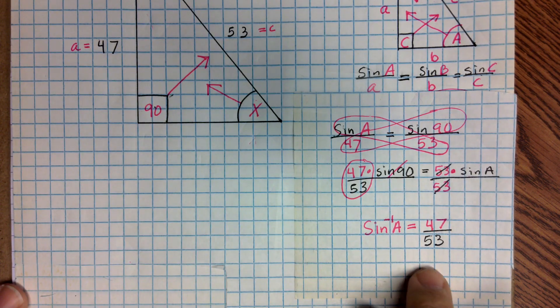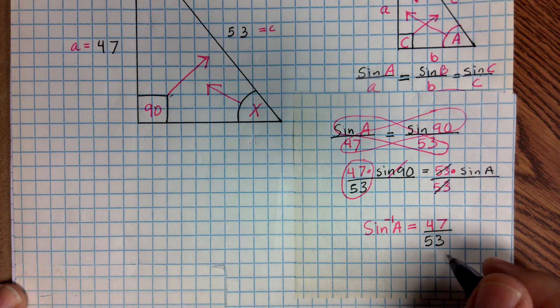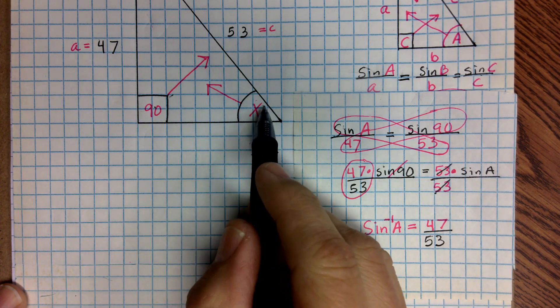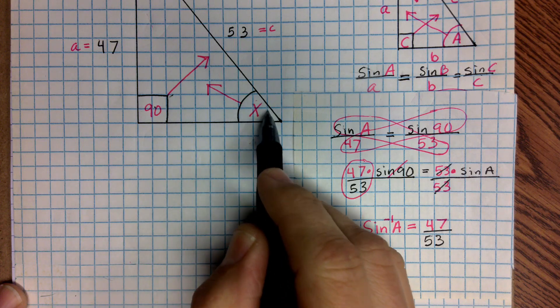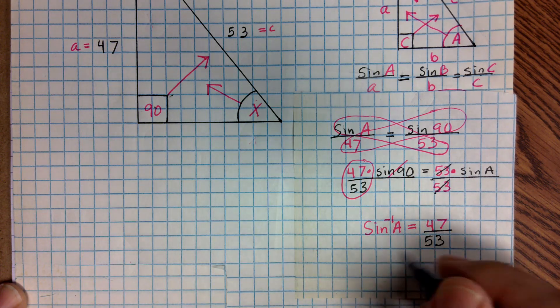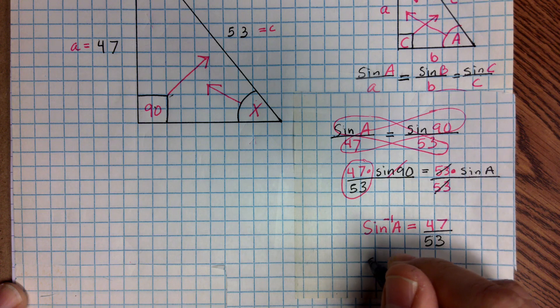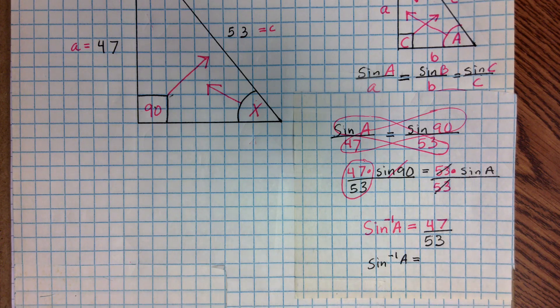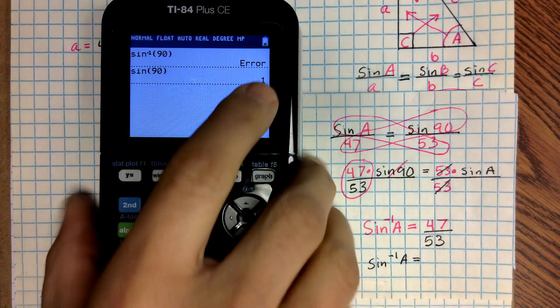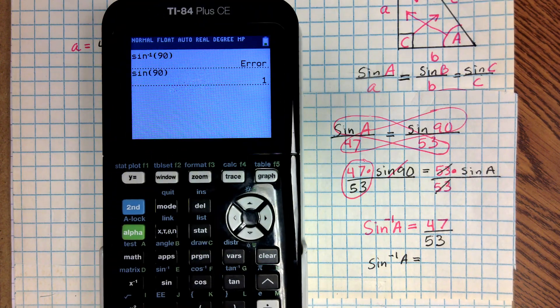Now when I put this into the calculator, when I put this ratio in the calculator, it's going to give me an angle. And that angle is going to be the value of this angle right here, angle A, represented by the variable X. So I'm going to go ahead and write inverse sine A equals, I'm going to get my calculator, and I'm going to type it in.